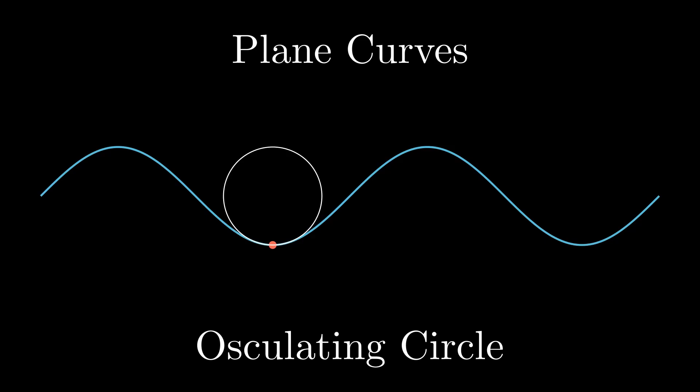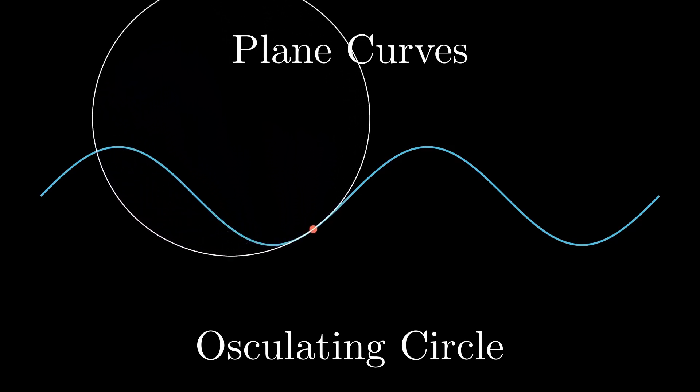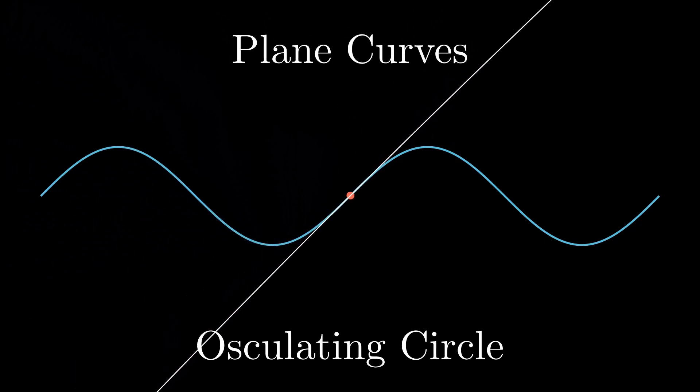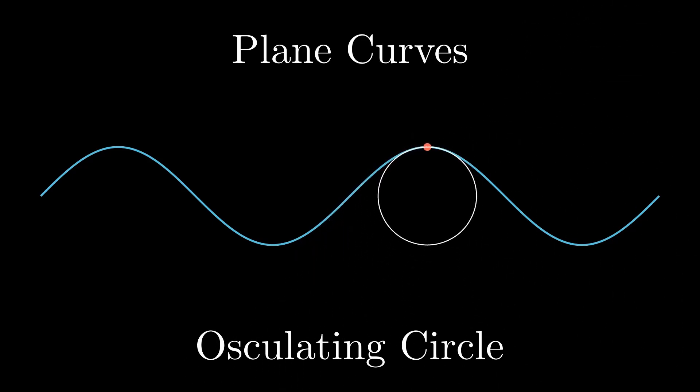The curvature of the osculating circle at that point is taken as the curvature of the curve. If a point on the curve cannot be well approximated by a circle, the curvature is zero. At some points, the circle is on the other side of the curve, which means that at these points, the sign of the curvature is different. Without additional information, it doesn't make sense to say that one is positive and the other negative.